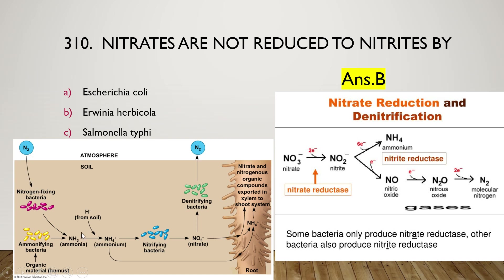This is the nitrogen cycle, where atmospheric nitrogen is incorporated into plant cells. Nitrogen-fixing bacteria fix nitrogen as ammonia, which is converted to nitrite by nitrifying bacteria, and then nitrite is absorbed by plant roots. Nitrite can also be converted back to atmospheric nitrogen by denitrifying bacteria.